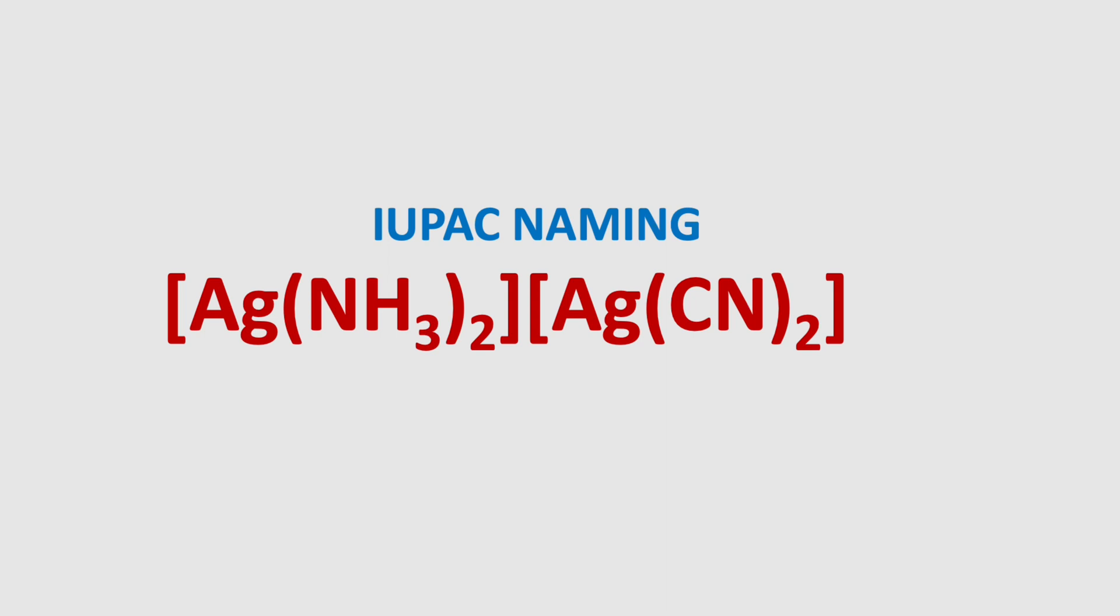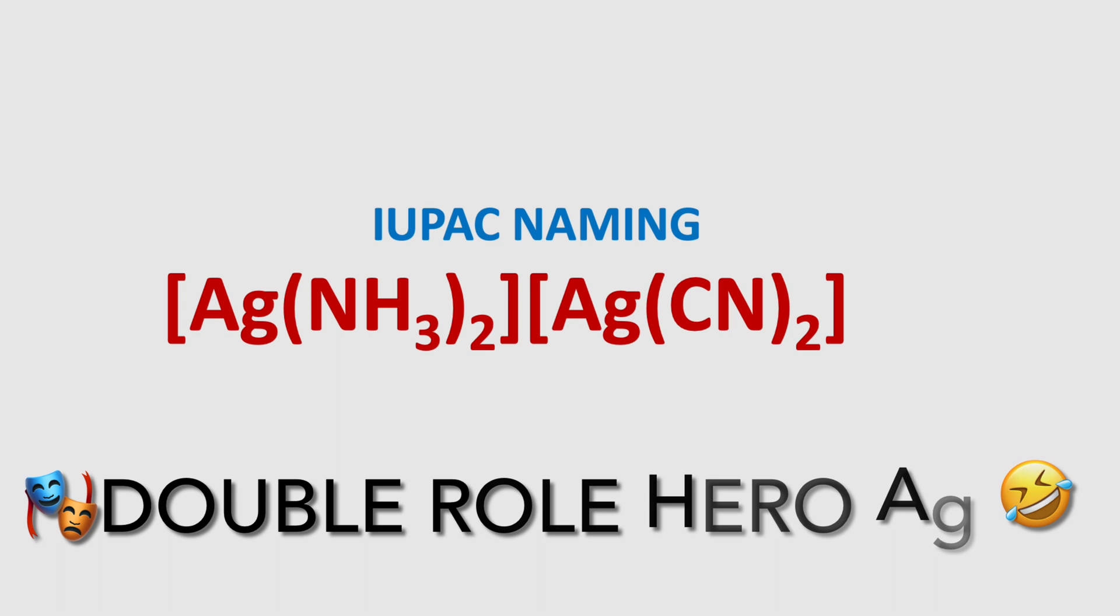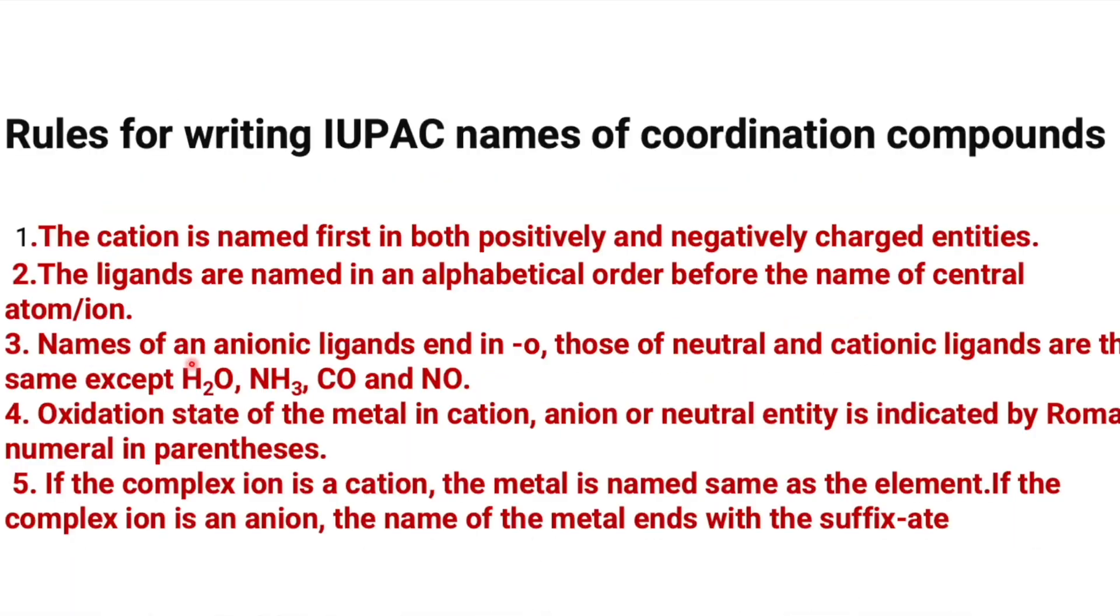Welcome to Aurora chemistry for everyone. In this video we're going to see the IUPAC naming of a coordination compound: [Ag(NH3)2][Ag(CN)2]. To write the IUPAC name, certain rules are there we need to follow.